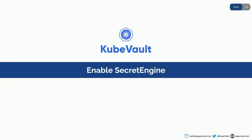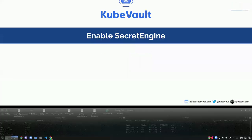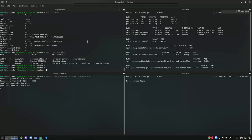Next, we want to enable our secret engine. So what is a secret engine? A secret engine is basically a Kubernetes CRD designed to automate the process of enabling and configuring different aspects of secret engines in Vault in a Kubernetes-native way. I'm going to use a MySQL database for enabling the MySQL secret engine. I have already created a MySQL database instance here.